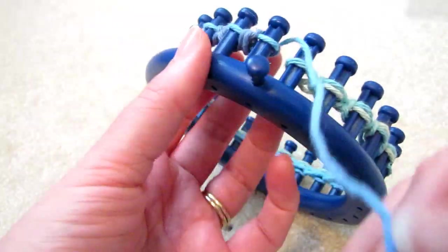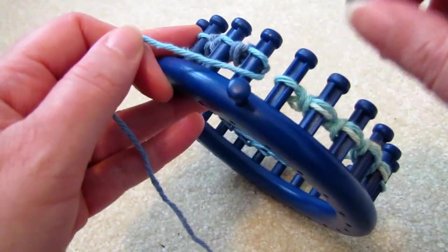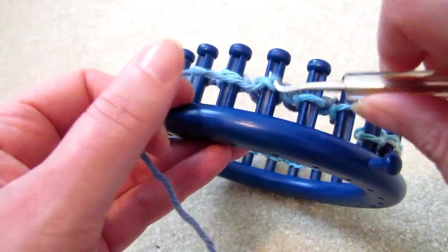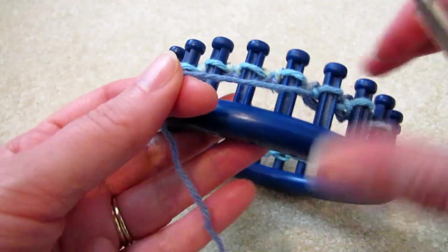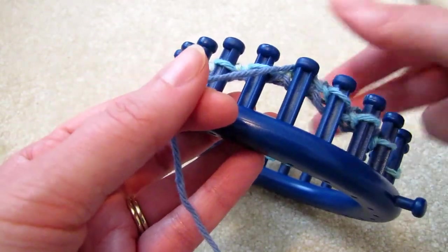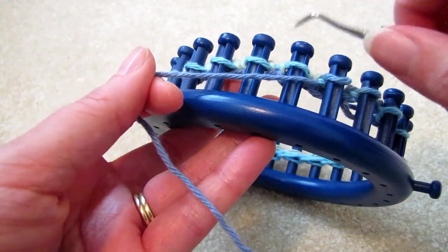The third row, purl again. Then repeat this twice more. So finish this row in the purl stitch, then the next row knit, then purl again, and I'll meet you for the seventh row.